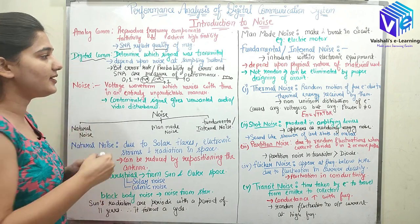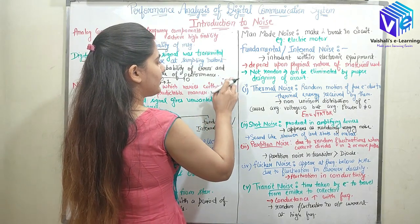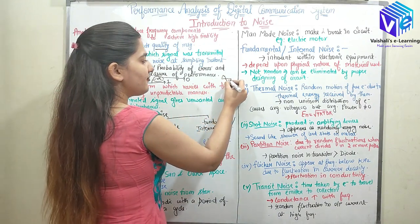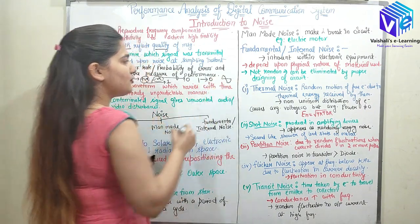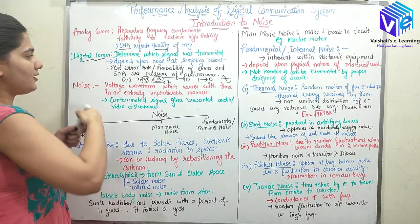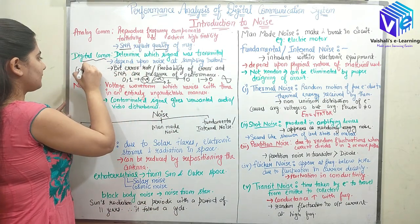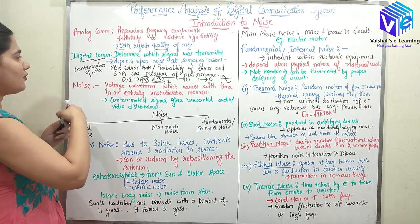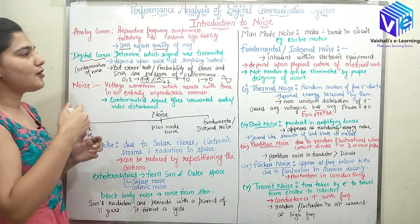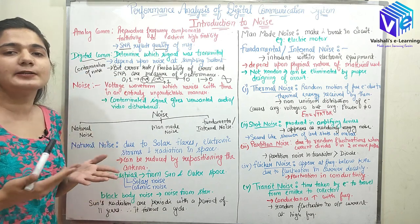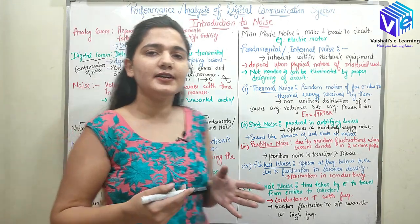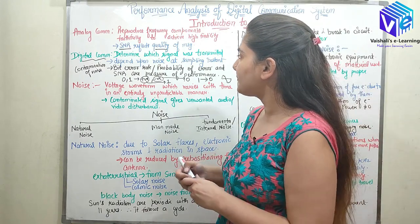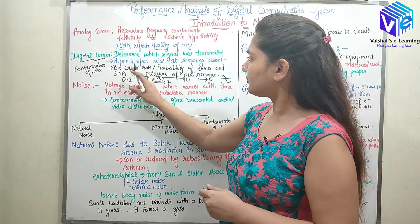Noise can interfere in such a way that if the transmitted signal is 1, it can show a negative value at the receiver, so noise can cause 1 to be received as 0. This is called contamination of noise to the signal. The noise determines which signal is received — whatever signal was transmitted, the noise determines the output received.